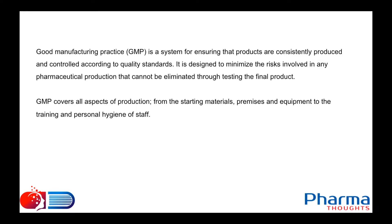When we manufacture a product we normally do final product testing — raw material testing, in-process testing, intermediate testing, and then final product testing. Someone may argue that since they are doing final product testing and ensuring it meets requirements, they can release the product. But final product testing does not give complete assurance that the product is meeting actual requirements. Finished product testing is a part of GMP, but it cannot replace GMP.